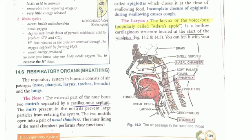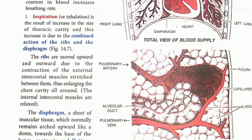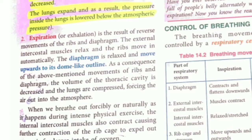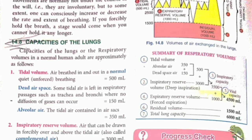Questions related to this diagram are given in the exercises, so you can solve them. Next, learn what is inhalation and exhalation — you should know the definitions. For capacities of the lungs, only the numerical values are needed — nothing else. Teachers mostly ask the difference between tidal volume, expiratory reserve volume, and residual volume, so you just need to write the numerical value.